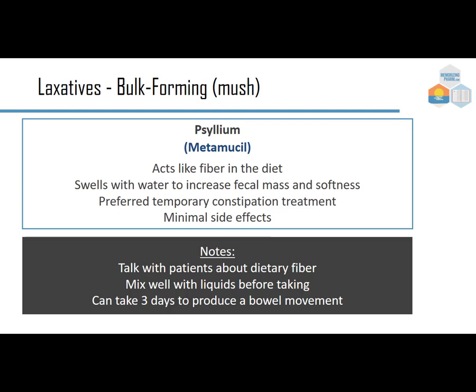Psyllium (Metamucil) acts like fiber in the diet — it swells with water to increase fecal mass and softness. It's the preferred temporary constipation treatment with minimal side effects. It should be mixed well with liquid before taking and can take up to three days to produce a bowel movement, so patients need to be counseled on realistic expectations.